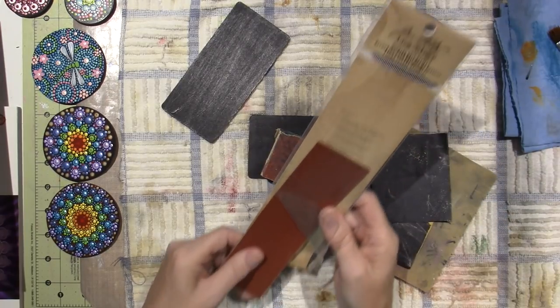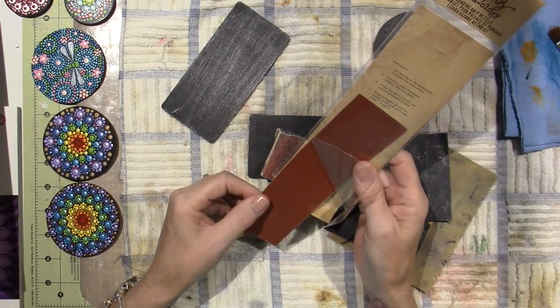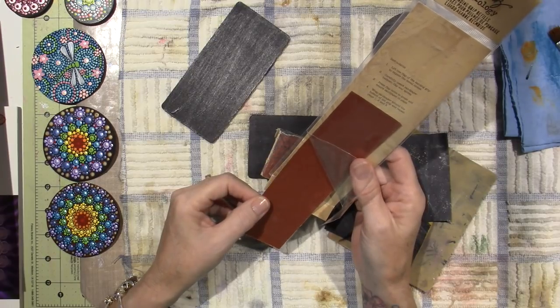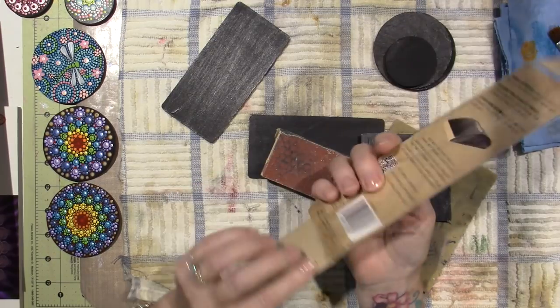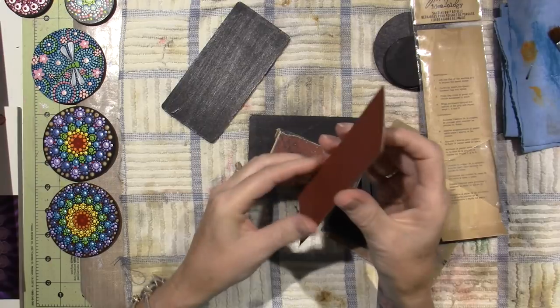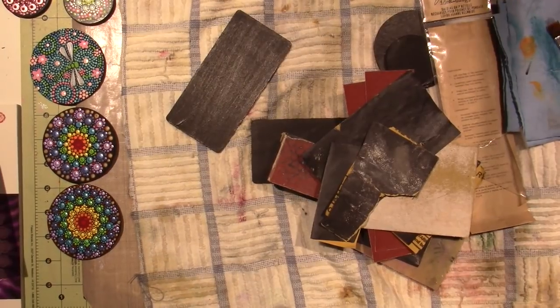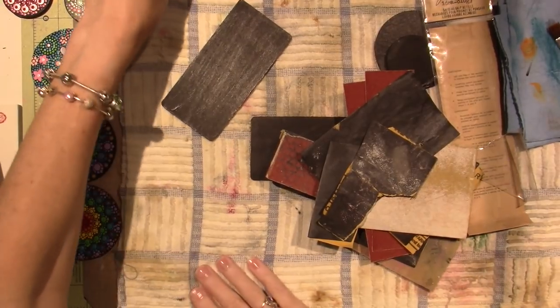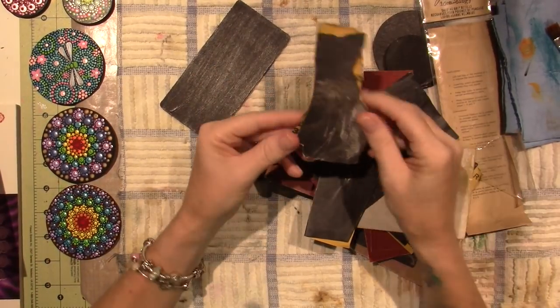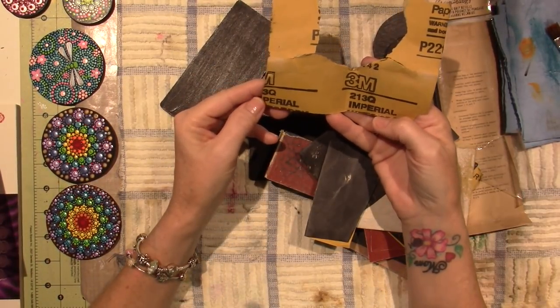I have a little itchy throat. Hold on. It doesn't say what grit it is. Let's see if it says it on the back. No. I'll be right back. Alright, I think I got my throat under control. Alright. So I have all these different ones. I don't know.